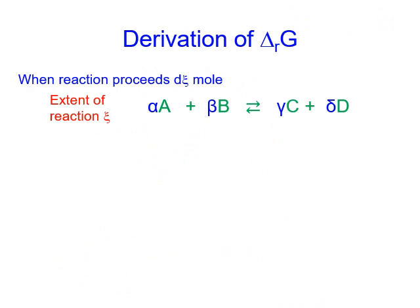We showed that for a simple reaction, the slope of Gibbs energy over composition — or the reaction Gibbs energy — can be calculated by the chemical potential of the product minus the reactant. For a complex reaction such as alpha A + beta B forming gamma C + delta D, if alpha, beta, gamma, delta are not all the same, then the number of moles change for A, B, C, D may be different.